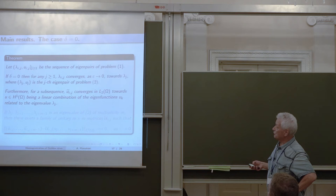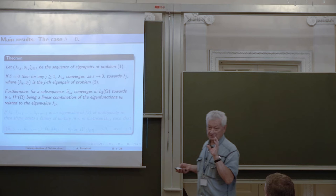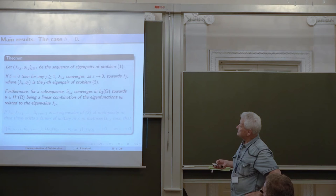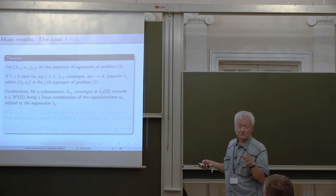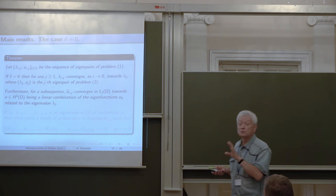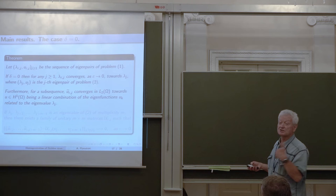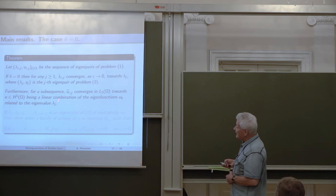Now we formulate our first theorem. We take the eigenpairs of the original epsilon problem and consider separately the case delta equal to zero and delta strictly between zero and one over d minus 2. If delta equals zero, then the eigenvalues lambda epsilon j converge to the limit eigenvalue lambda j. For eigenfunctions we must be careful with multiplicity: for simple eigenfunctions we have convergence in L2 of u_j epsilon to u_j.